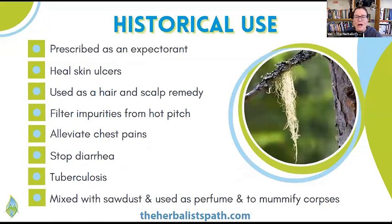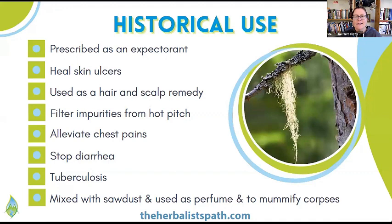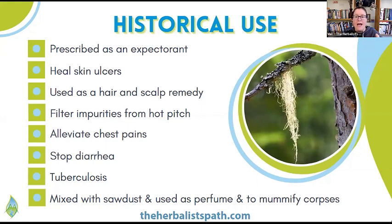There are a ton of historic uses to talk about. Usnea longissima, a very long strand of usnea, is known in Mandarin as San Luau and has been prescribed as an expectorant — to help loosen up congestion and stuck mucus in the respiratory tract. People also apply it externally, making it into a powder to help heal skin ulcers. They used the alcohol extract to treat things like lymphedema and tuberculosis.